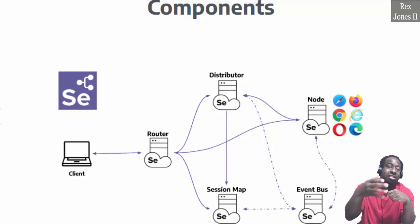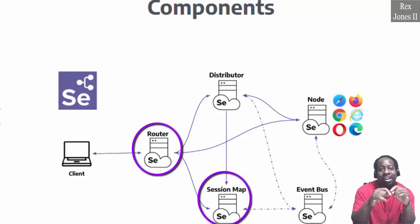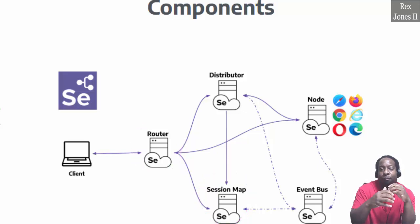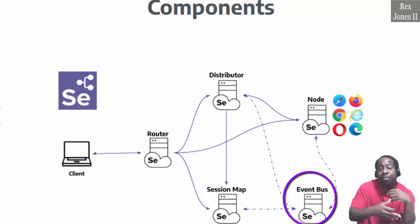When the session already exists, the router sends a session ID to the session map. In return, the session map sends the node that has a running session back to the router. For subsequent steps, the event bus operates as a path for communication to other grid components.